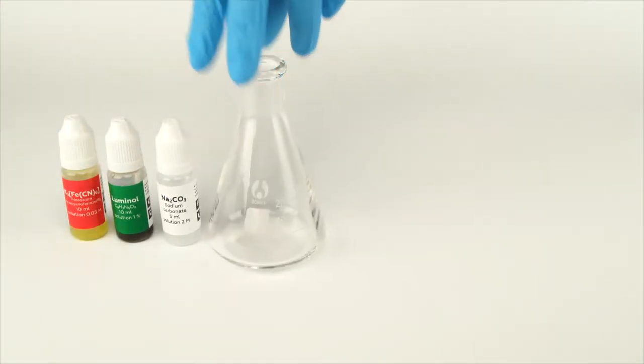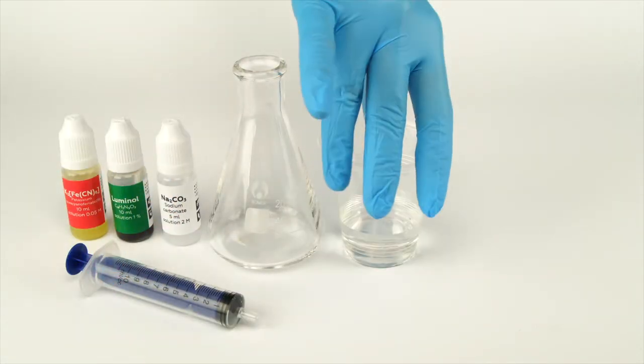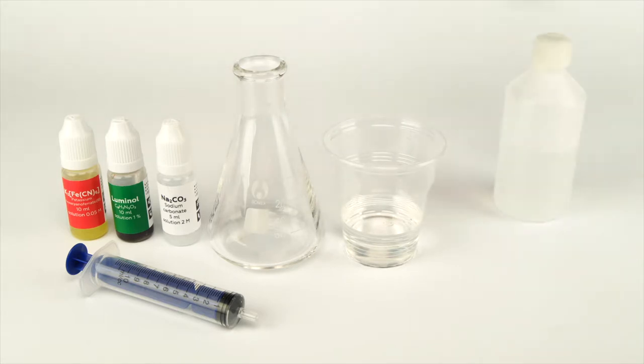Take the flask from your starter kit and a syringe from the experiment set. Also, prepare a cup of water, some 3% hydrogen peroxide, and a plastic cup in advance. Conduct this experiment in a room that you can easily make very dark.